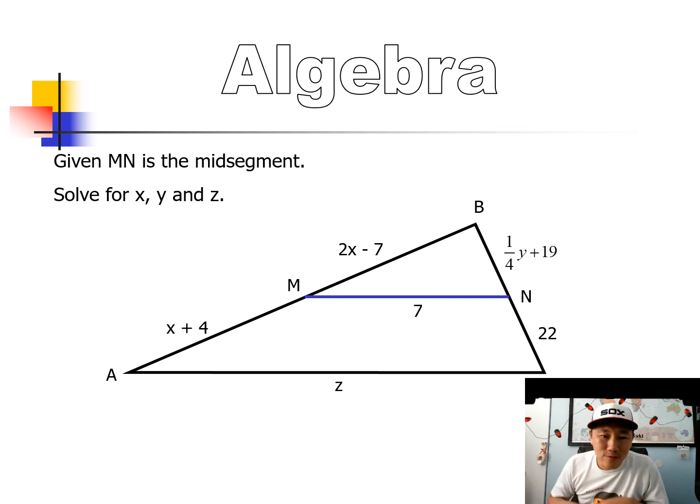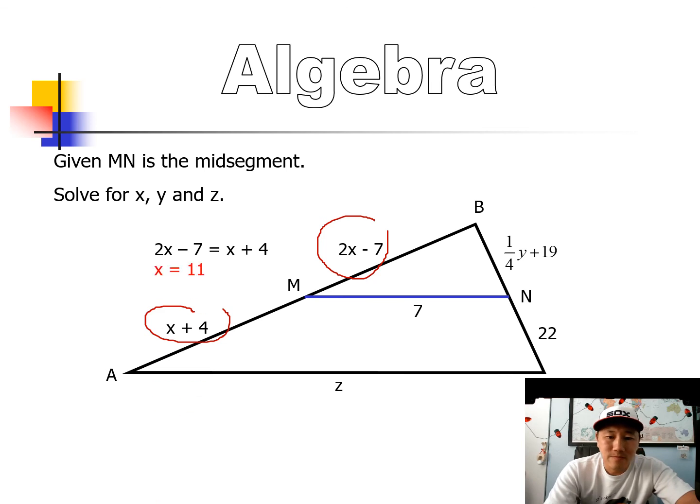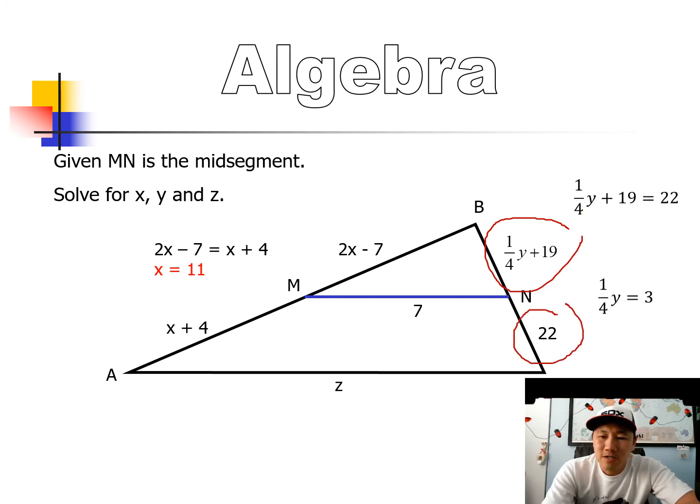Last one for the day. Let's use a little bit of algebra. So, we're given the mid-segment MN and we have to solve for X, Y, and Z. Let's do X first. It looks like there's an X here and an X here. So all you got to do is set them equal to each other. Use a little bit of pre-algebra. X equals 11. Here's Y. Set them up. Use a little bit of pre-algebra. Subtract 19 from both sides. Multiply both sides by 4. Y equals 12. And then the last one, Z, is the easiest one if we use the theorem. If that's 7, Z must be doubled. Z equals 14. So, that's all we have. Go ahead and do the homework.